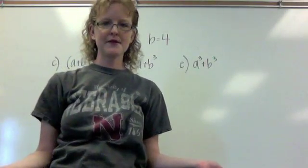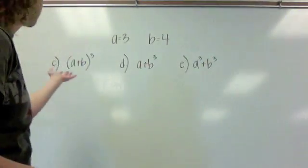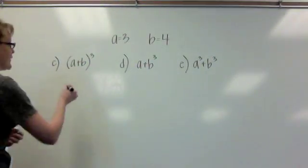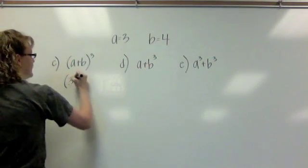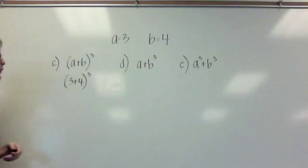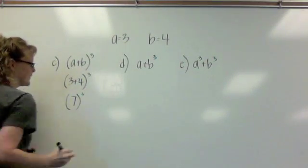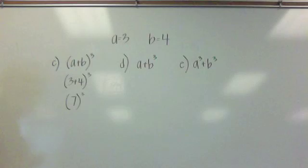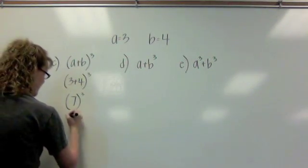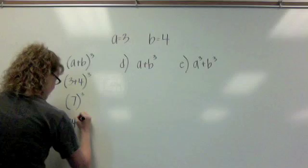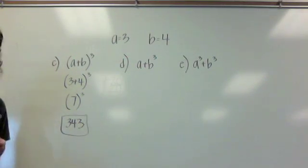Let's check our work from the examples you just completed. If I look at C, it says the quantity A plus B to the third power. We will substitute in 3 and 4 for A and B. Order of operations tells us to do the parentheses first. 3 plus 4 would be 7 raised to the third power. And 7 times 7 times 7 is 49 times 7, or 343.